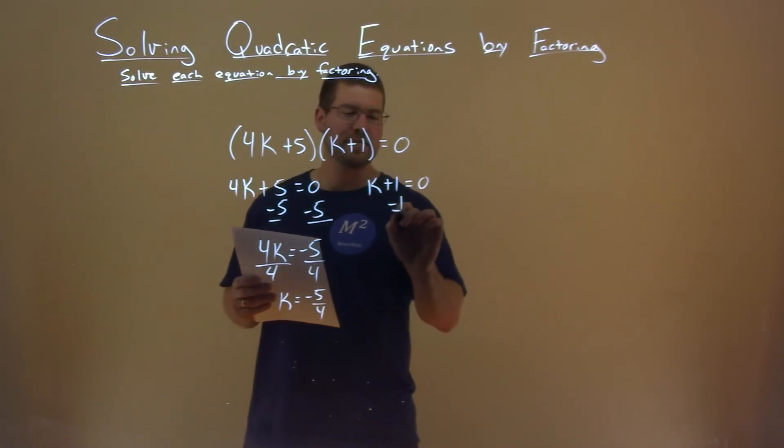Do the same thing here, a little easier. Subtract 1 from both sides, and k equals negative 1.